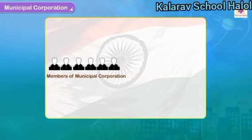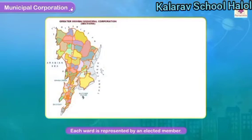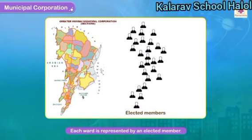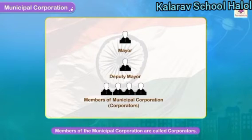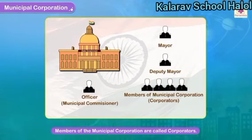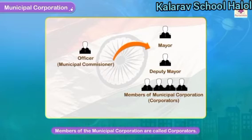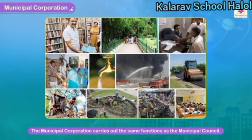The members are elected for a term of five years by the residents, and each ward is represented by an elected member. Members of the municipal corporation are called corporators. The corporators elect the mayor and the deputy mayor from amongst themselves. The state government appoints a municipal commissioner who helps in carrying out the functions of the municipal corporation, which carries out the same functions as the municipal council.